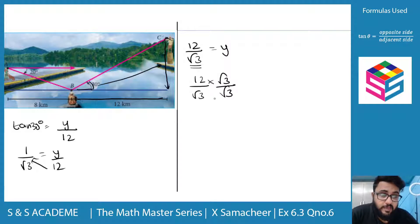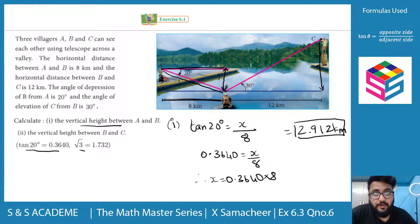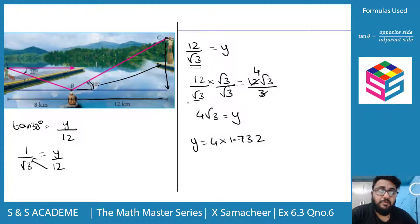Multiply and divide by root 3. This leads us to 4 root 3 in the distance. 4 into root 3 value 1.732, if you multiply we get 6.928 kilometers. So that's the difference.